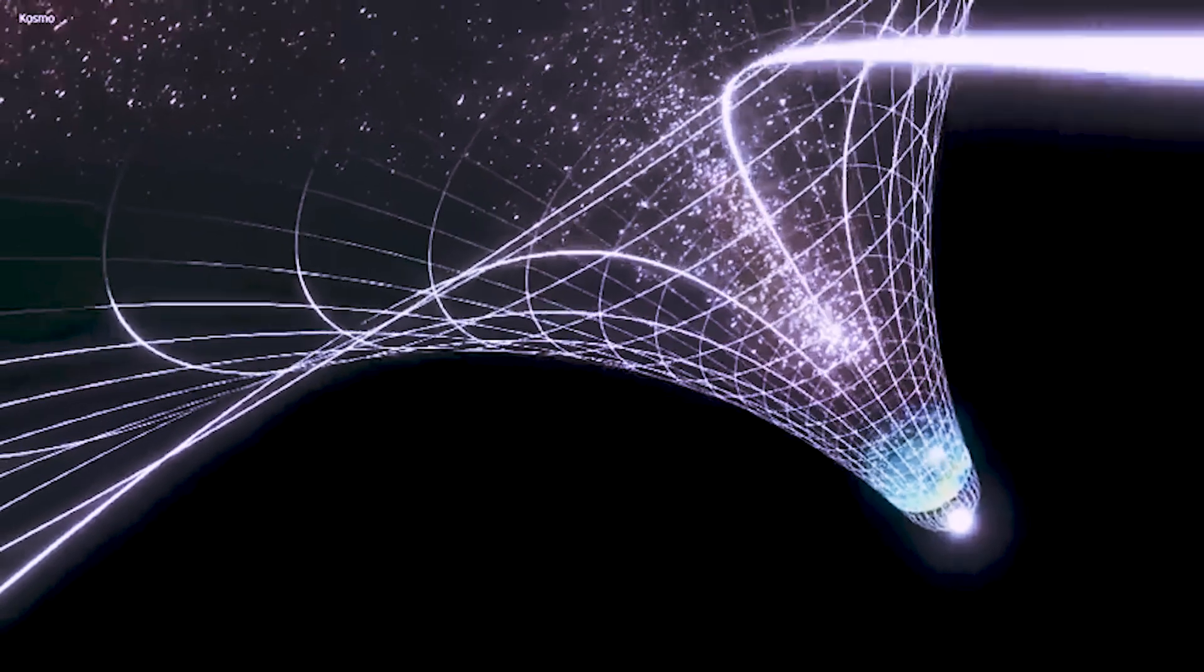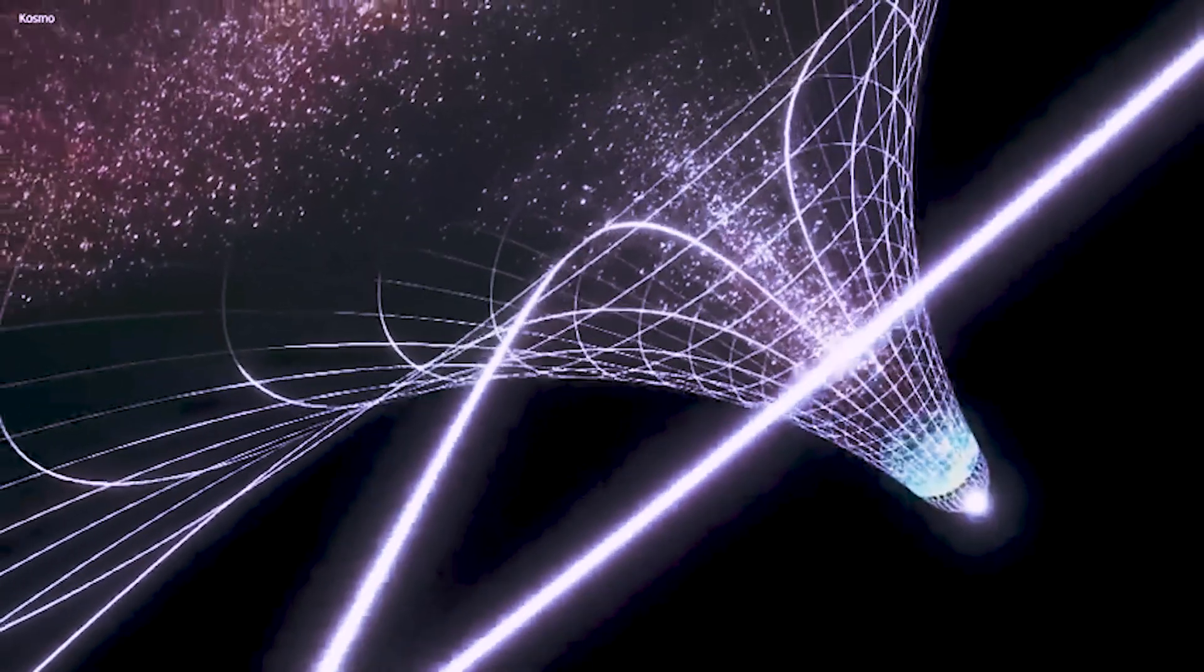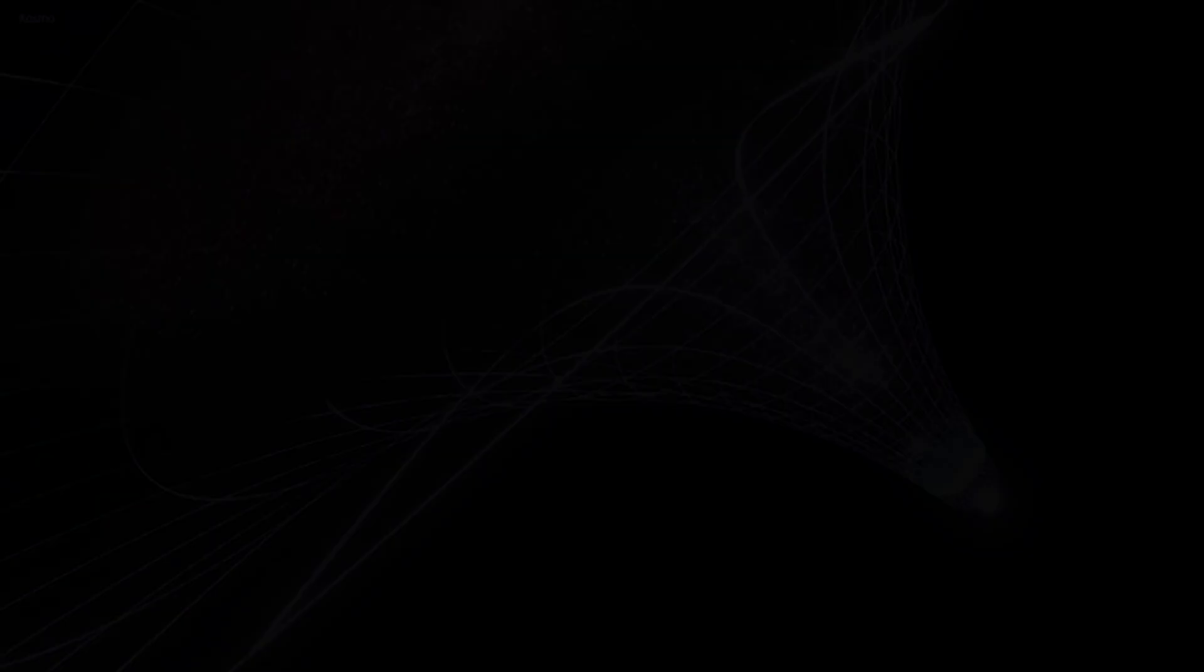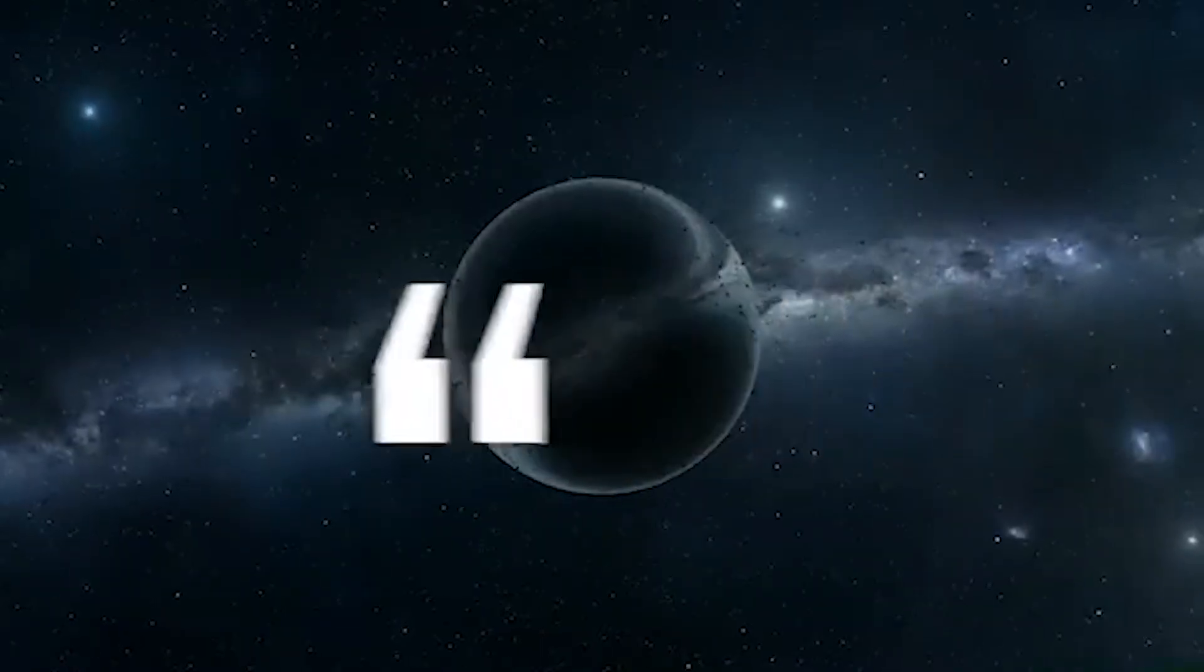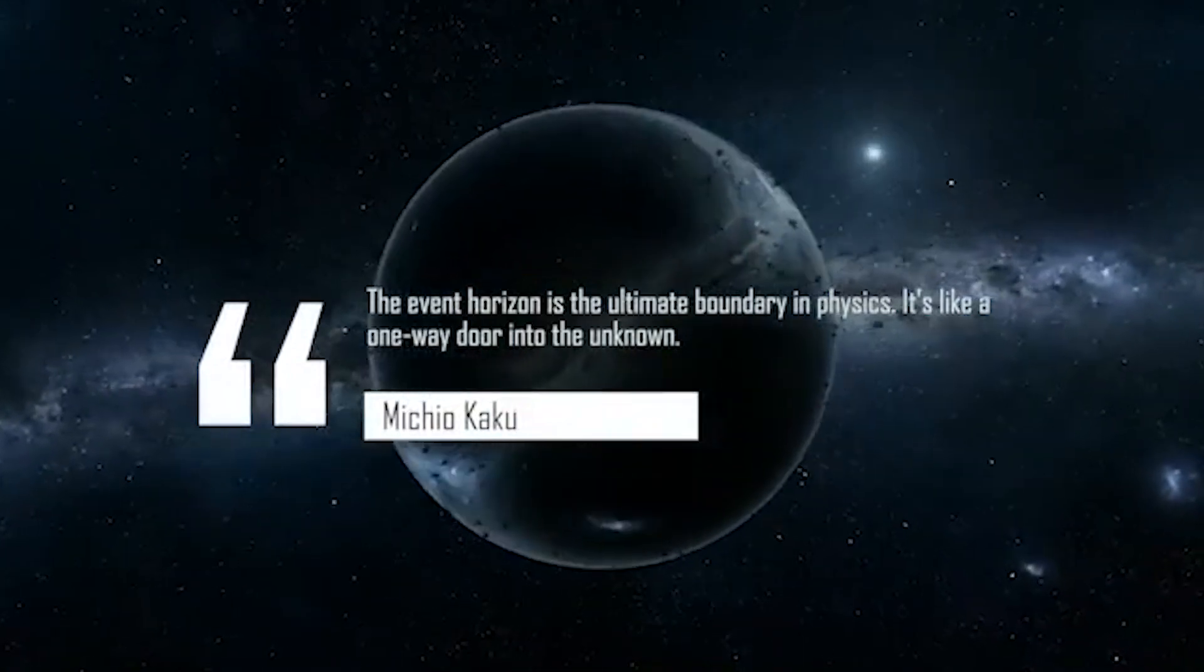The event horizon of a black hole is often described as one of the most mysterious and terrifying places in the universe. It's the point where the rules of time and space begin to warp in unimaginable ways. Anything that crosses this boundary is trapped forever, without any chance of escaping, even light itself. As Michio Kaku explains, the event horizon is the ultimate boundary in physics. It's like a one-way door into the unknown.